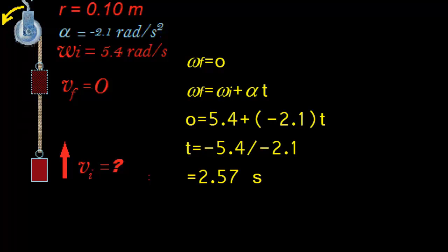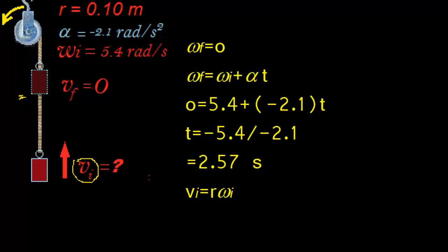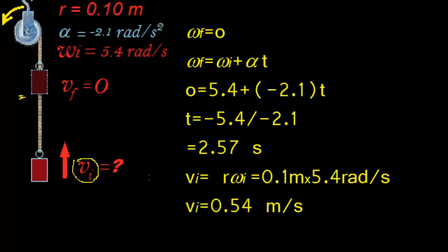It takes 2.57 seconds for the objects to stop here. Now initial velocity, radius, length, time, angular velocity, 0.1 meters times 5.4 radians per second, 0.54 meters per second. So this object is moving upwards, 0.54 meters per second.